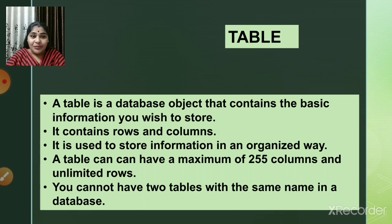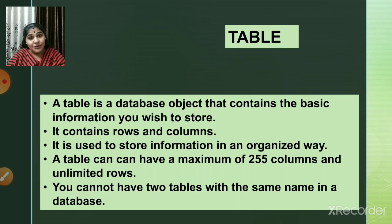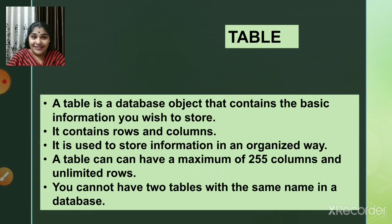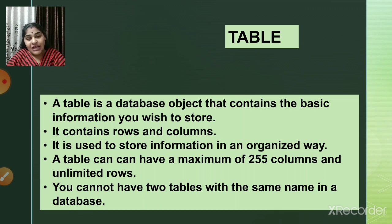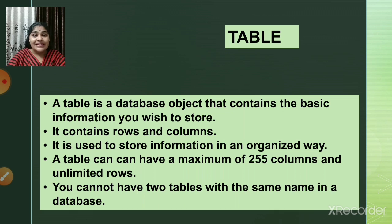A table can have a maximum of 255 columns and unlimited rows. This means 255 different fields can be created — that is a huge amount of data we can store. The unlimited rows means you can store unlimited records for a particular organization.